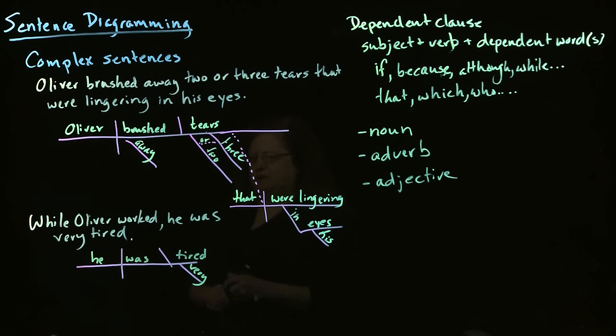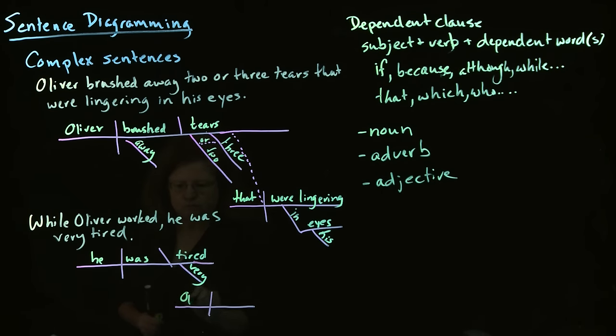And then we have our dependent clause, which is going to be, again, it's below, even though it comes before it in the sentence. So we have our subject and verb in this one. This one's very simple. It's just Oliver worked.